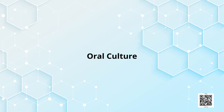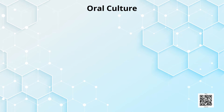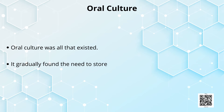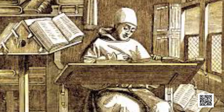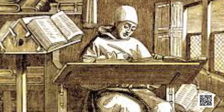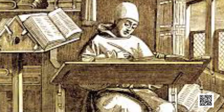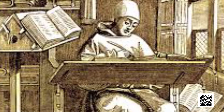First and foremost came oral culture — orality, the spoken words. Then the manuscripts, after that print, and now the electronic. Oral culture was all that existed. It gradually found the need to store what was said for long periods and slowly developed scribble culture. Scribble culture, being inaccurate and tedious, developed into print culture. Each segment is rich with its own effect on the world.